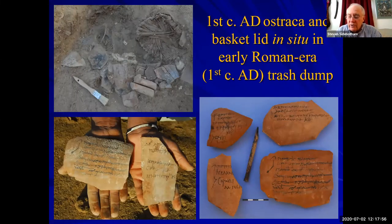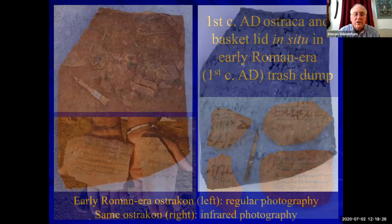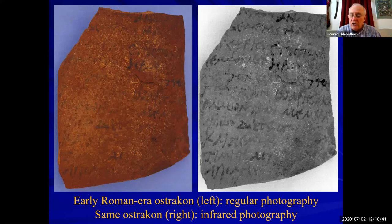These documents also include broken pot sherds with writing on them, which in the west we call ostraca. We've found hundreds and hundreds of these. This basket lid contains a number of ostraca that have been thrown out. This particular set deals with the Roman army's control of the acquisition, transport, and distribution of fresh water in the city. Oftentimes the ostraca are not very legible, as you see on the left. We've discovered that infrared photography can sometimes produce a much improved image — as you can see on the right, there's a lot more legibility than in the example on the left.